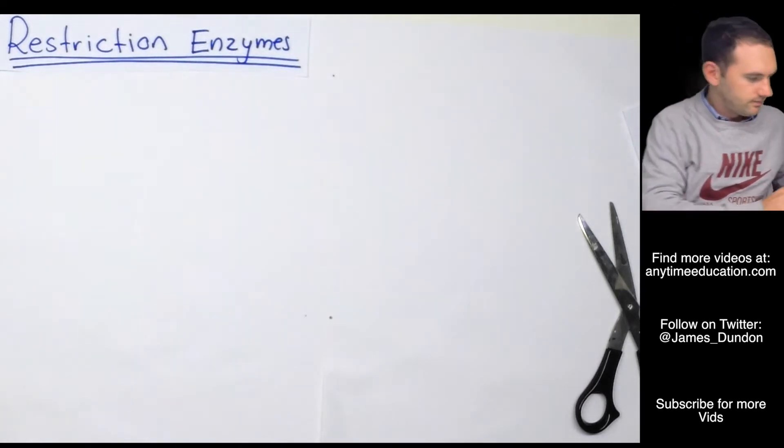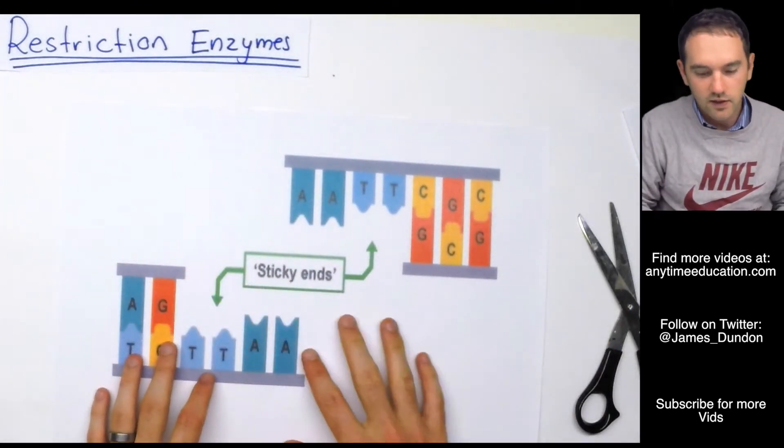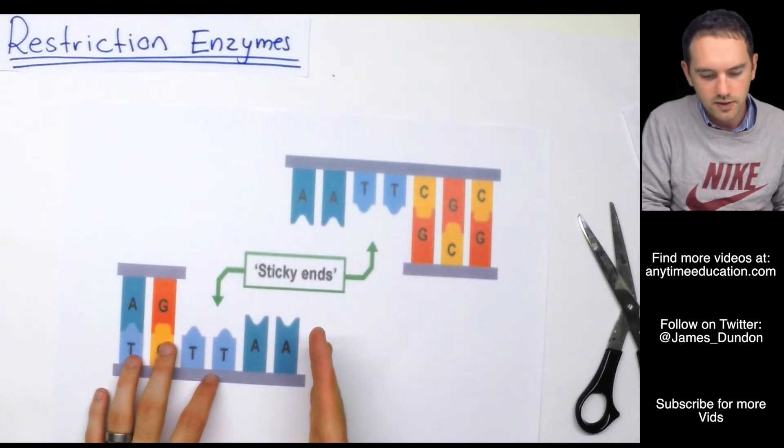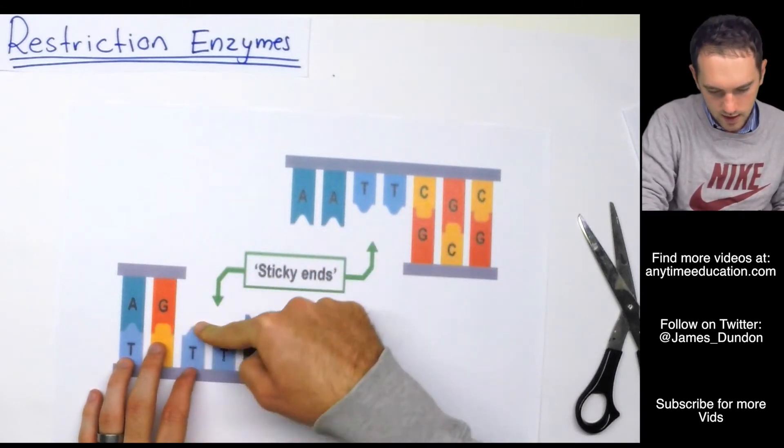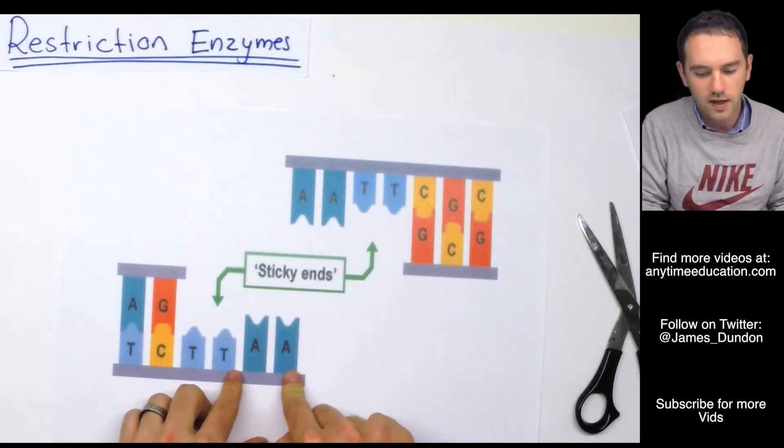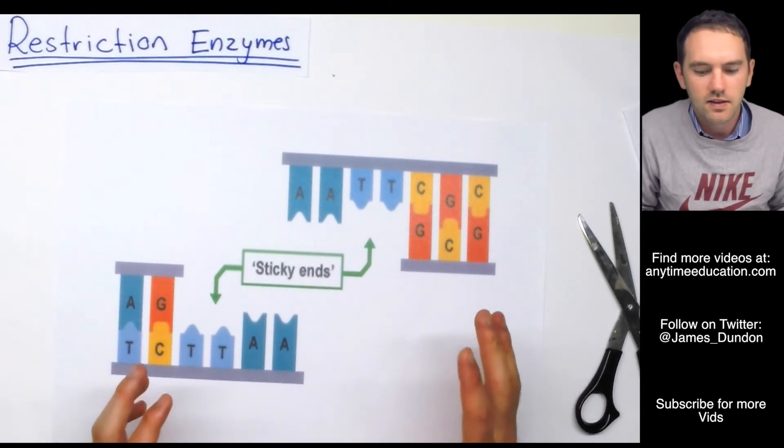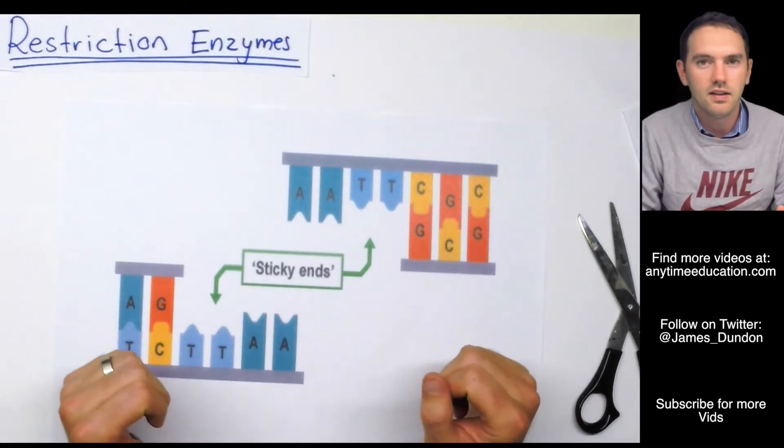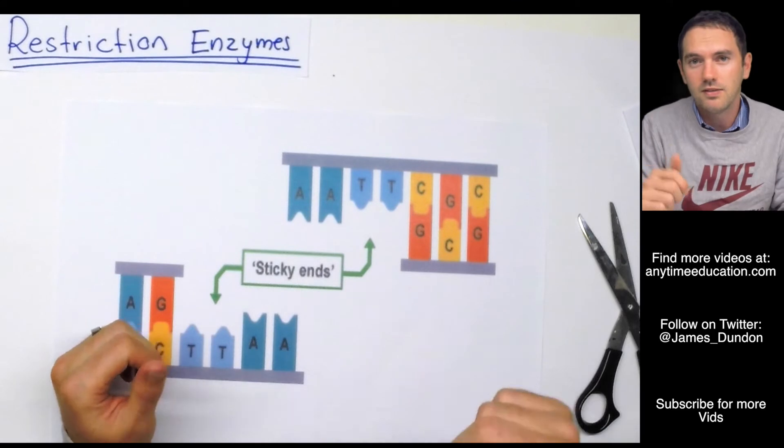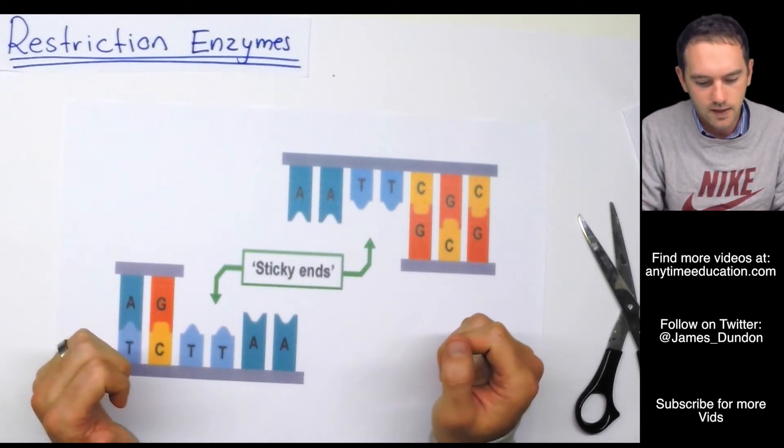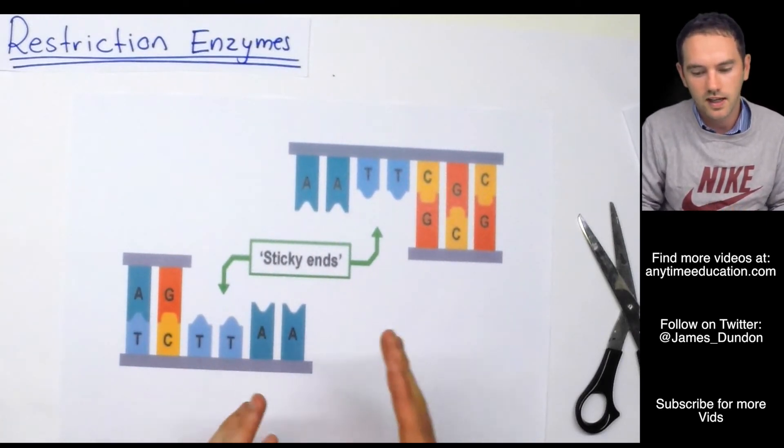The other way that it could cut is go along, recognize a sequence but instead of just cutting in a blunt fashion, it actually cuts like so. So it cuts and then leaves these TTAA exposed bases and TTAA exposed bases. Now why did bacterial cells develop these two different mechanisms of cutting DNA or restricting DNA? If you've got any ideas please post them in the comments below. I'd love to hear your theories because there must have been some kind of selective pressure that allowed both of these to be successful ways of cutting up DNA.